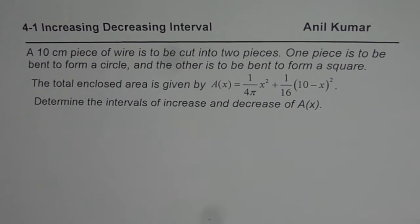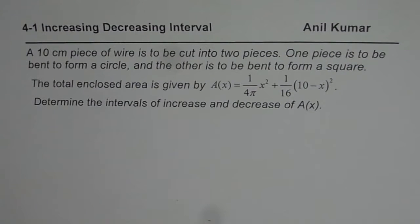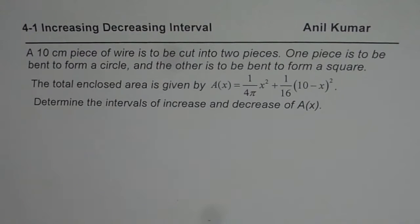I am Manil Kumar and in this video we will understand increasing and decreasing intervals for a particular application. The question is: a 10 cm piece of wire is to be cut into two pieces. One piece is to be bent to form a circle and the other to form a square. The total enclosed area is given by A(x) = (1/4π)x² + (1/16)(10 − x)². Determine the intervals of increase and decrease of the area as a function of x.